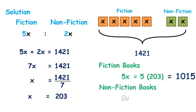Non-fiction books equals 2x. 2 times 203 equals 406. There are 406 non-fiction books.